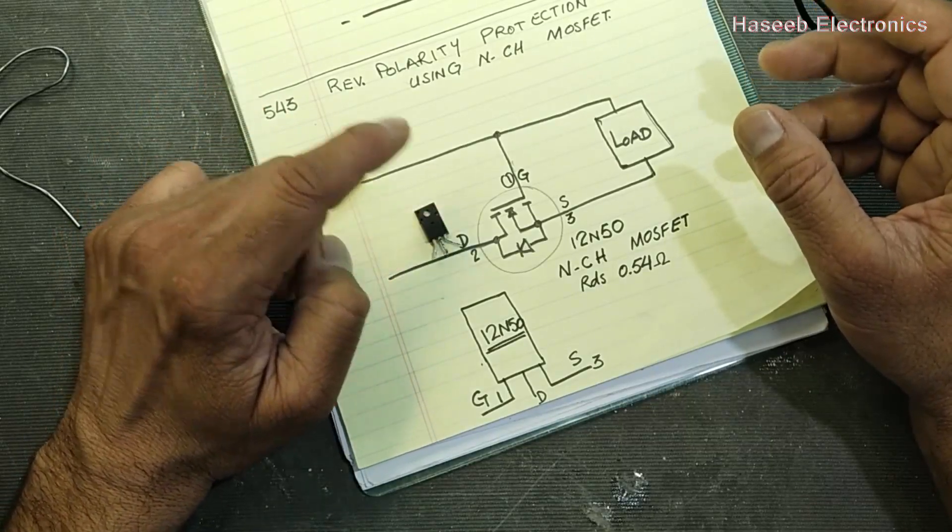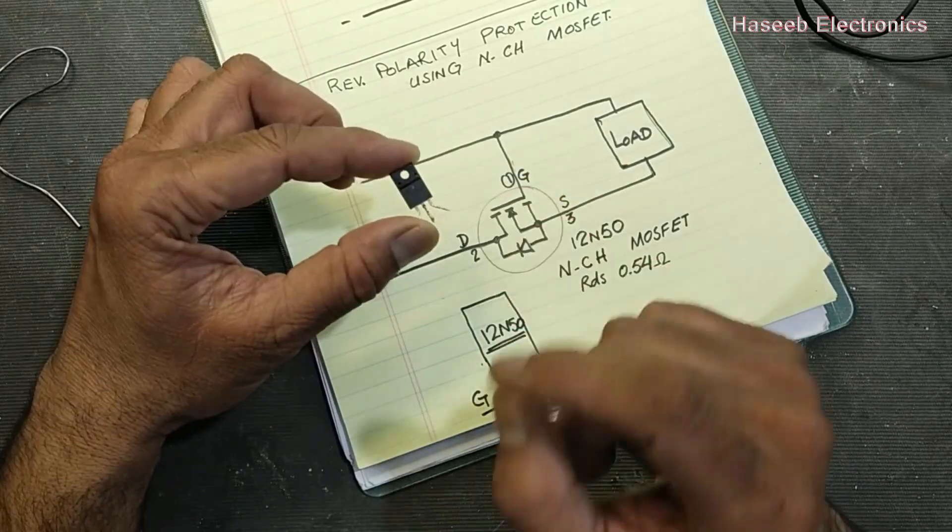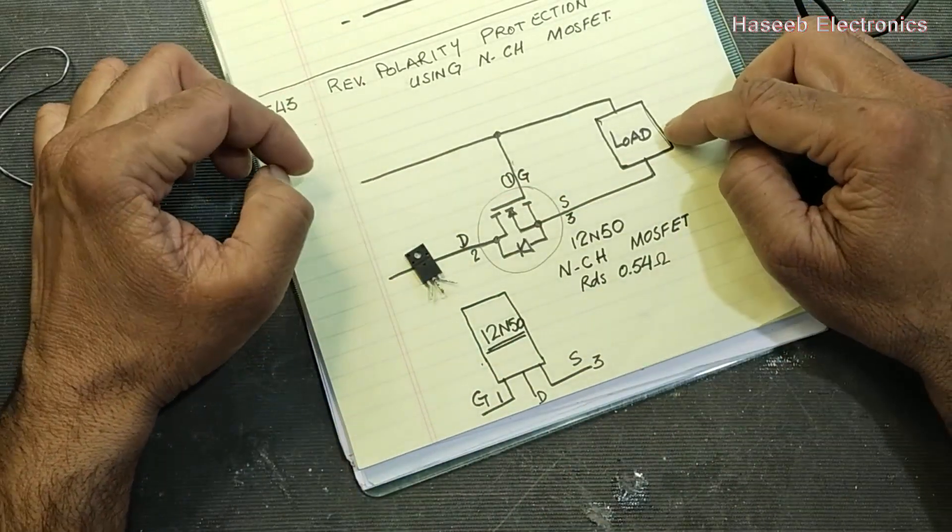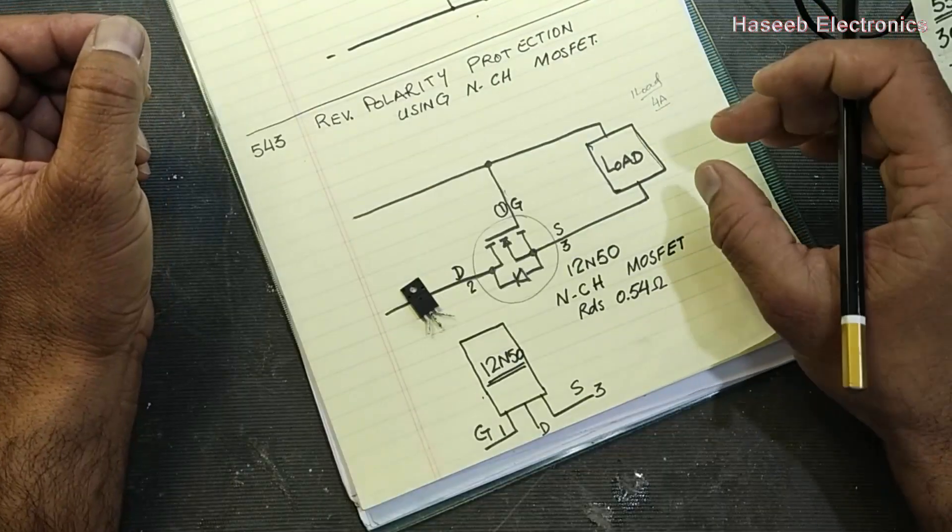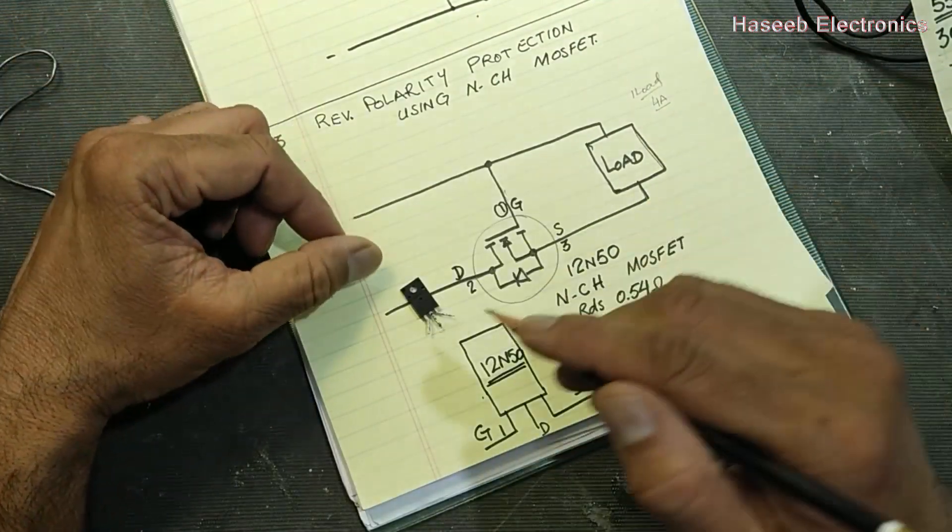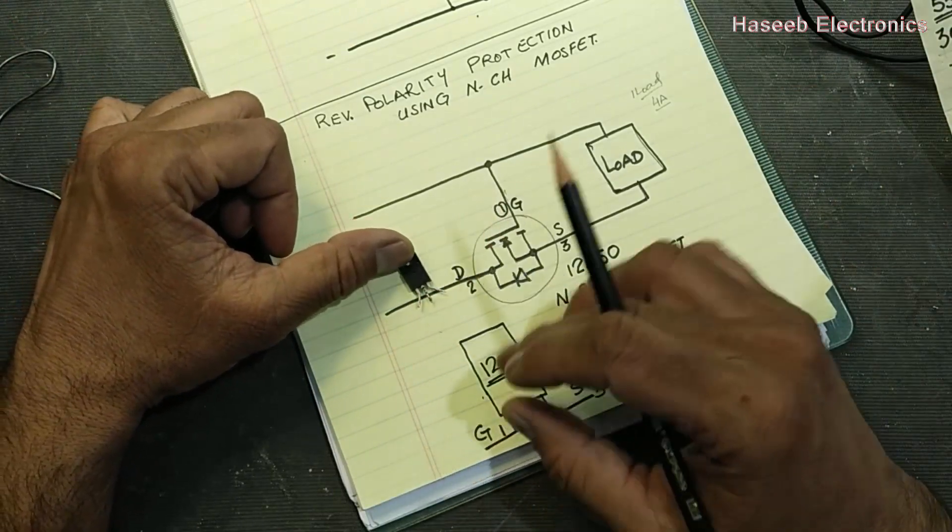While considering MOSFET, we need to determine the load current. For example, I have 4 ampere load current. Multiply load current by 2 or 3 to take a safe usage of this MOSFET.